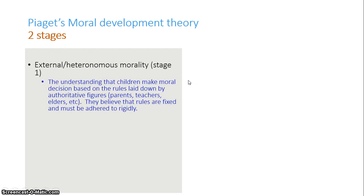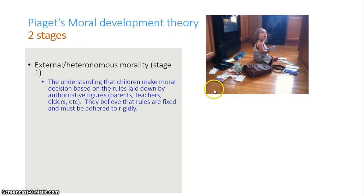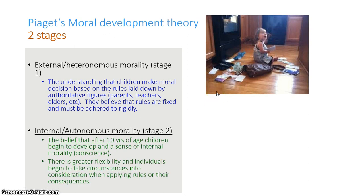Stage one is external or heteronomous morality, and stage two is internal or autonomous morality. In heteronomous morality, children make moral choices based on the rules that are laid down by authority figures — parents, teachers, elders, big brother, big sister, grandpa, grandma, etc. They generally believe that those rules are inflexible and should be rigidly adhered to; these rules cannot change. So when a child under the age of 7 or 8 does something wrong, they are usually scared and looking for imminent justice — looking to be punished. The external morality is so-called because the morality comes from the outside, from other figures.